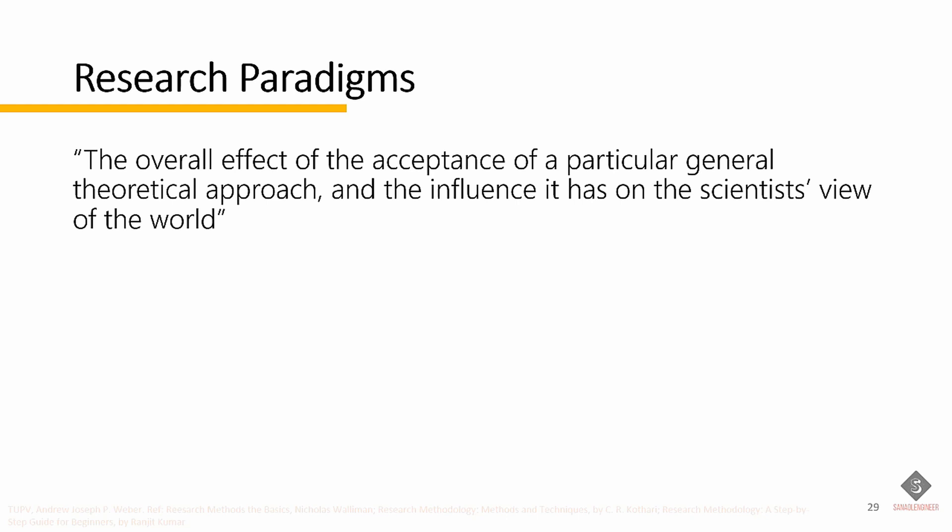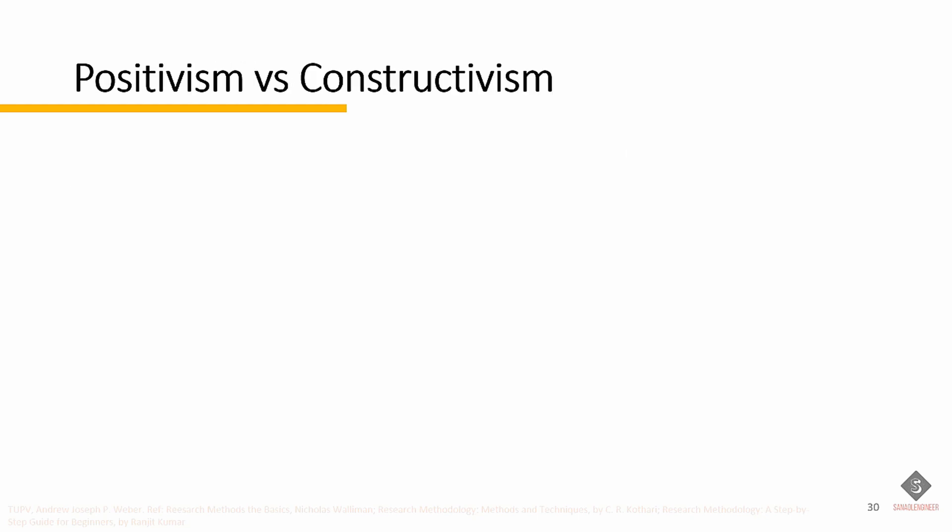A research paradigm is the overall effect of the acceptance of a particular general theoretical approach and the influence it has on the scientist's view of the world. Normal scientific activity is carried out within the terms of the paradigm. A paradigm is a framework of thought or beliefs by which you interpret reality. There are two main paradigms that form the basis of research in the natural and social sciences.